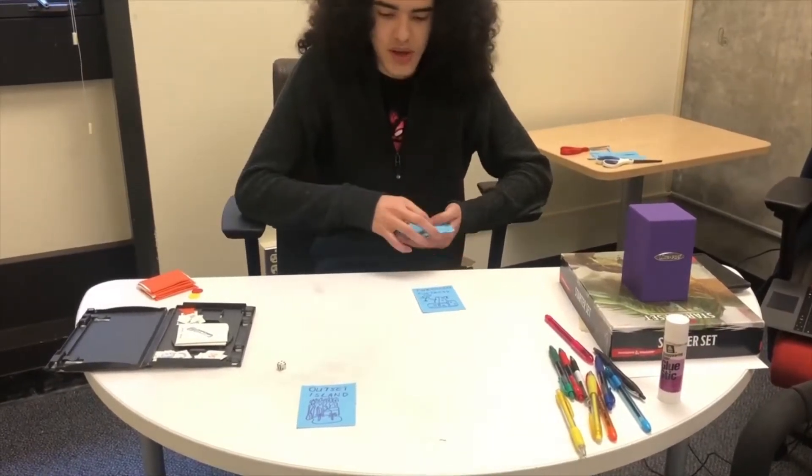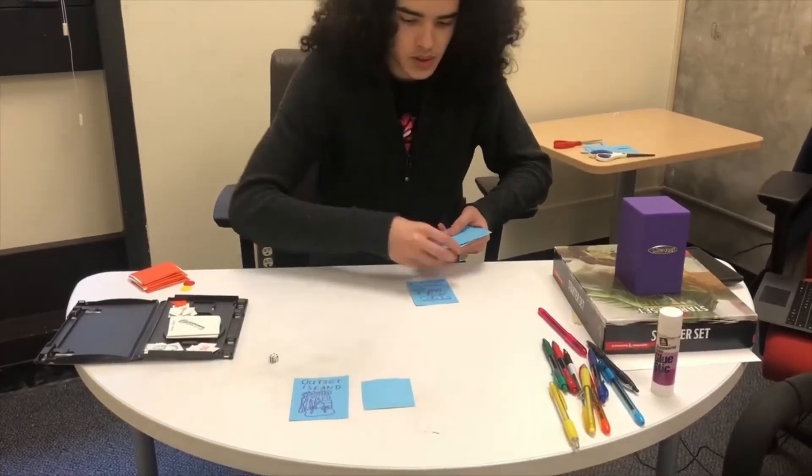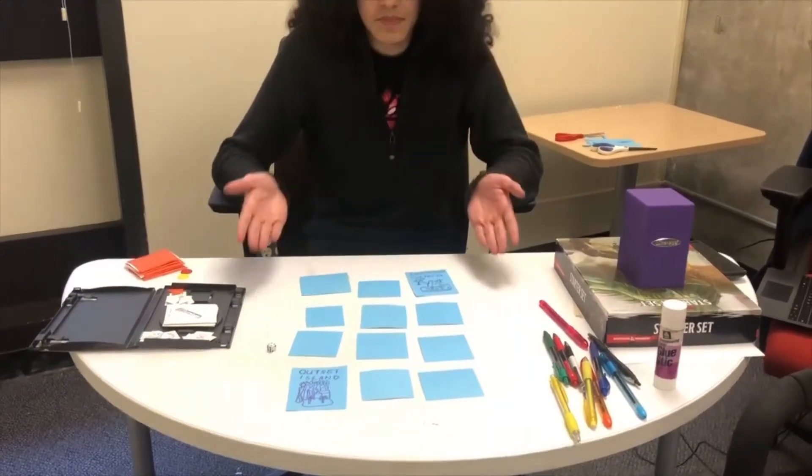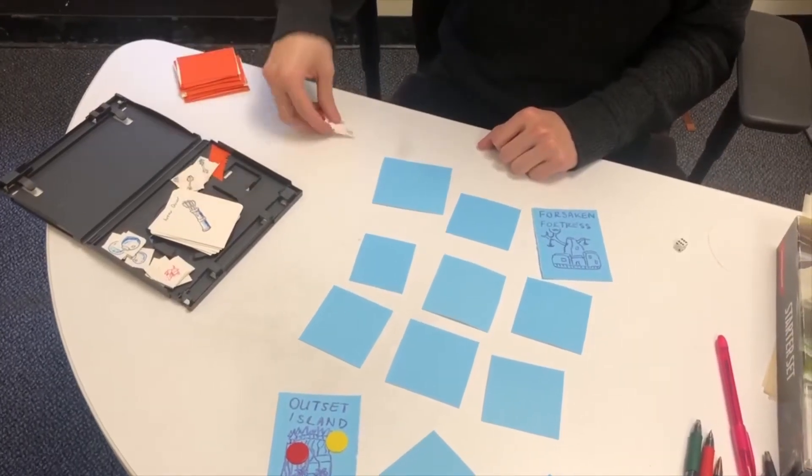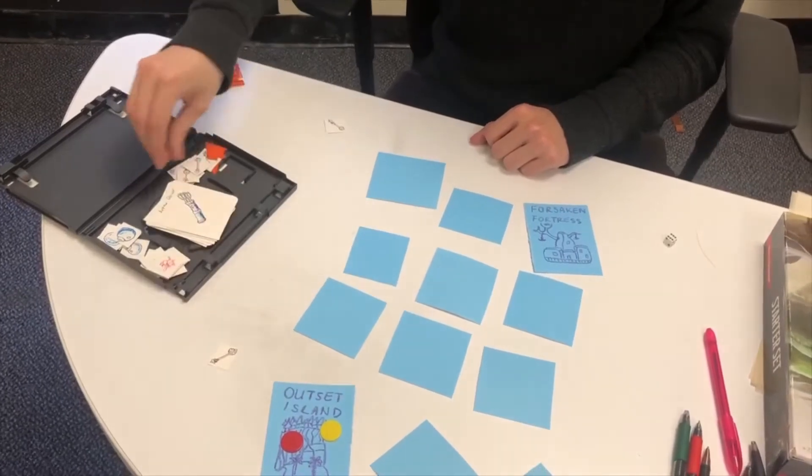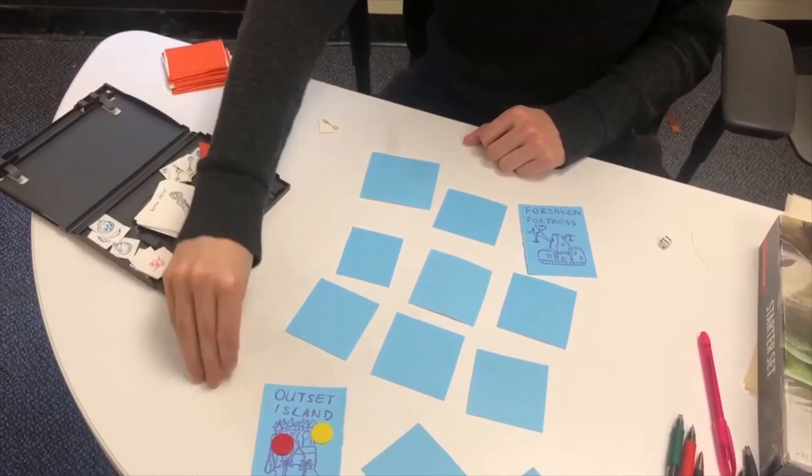Form a 3x4 grid with the Outset Island and Forsaken Fortress on opposite corners. After you've completed the setup, give players their starting items. Each player starts out with a bomb and an arrow.